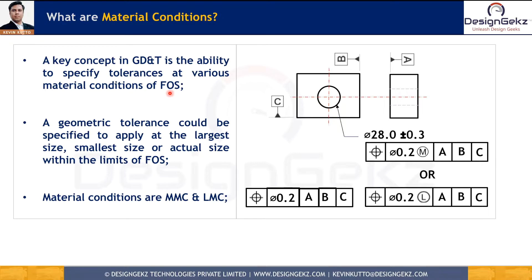GD&T allows us to specify geometric tolerance at various material conditions of a feature of size. In this example, we have a block with a cutout, datum faces A, B, and C, with basic dimensions defining the true location of the hole. This hole has a diameter of 28 ±0.3, meaning it can vary from 27.7 to 28.3, and we have three tolerance conditions shown.